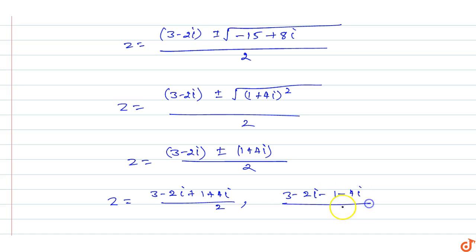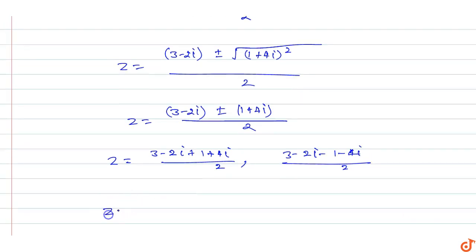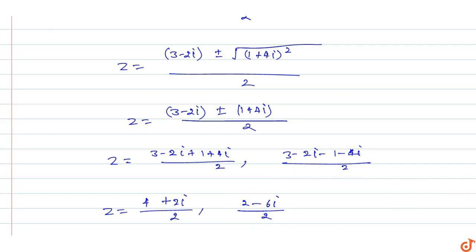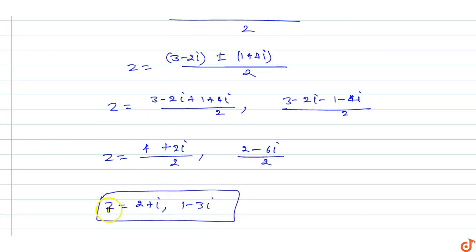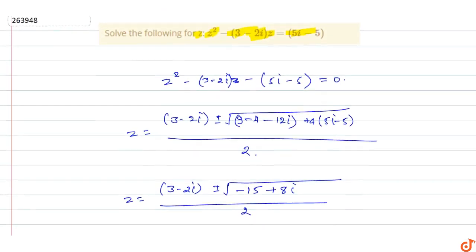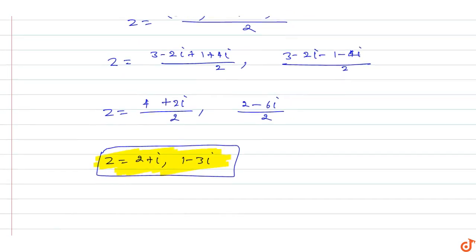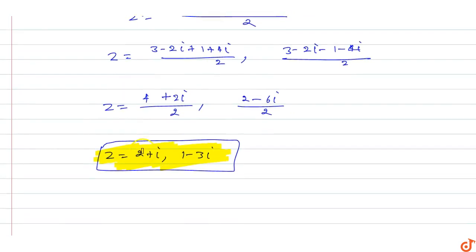Taking the plus case: 3 plus 1 is 4, and minus 2 plus 4 iota gives plus 2 iota, divided by 2, giving 2 plus iota. Taking the minus case: 3 minus 1 is 2, and minus 2 minus 4 iota gives minus 6 iota, divided by 2, giving 1 minus 3 iota. So the answer is Z equals 2 plus iota or Z equals 1 minus 3 iota. This is the solution to the equation Z squared minus (3 minus 2 iota) Z equals 5 iota minus 5.